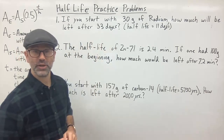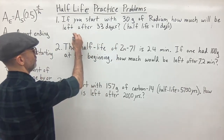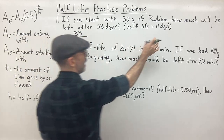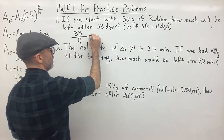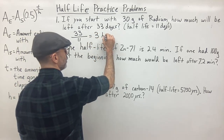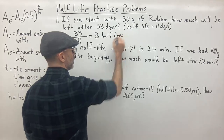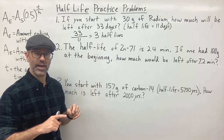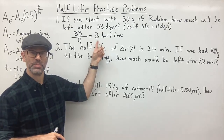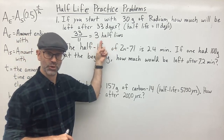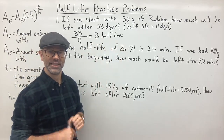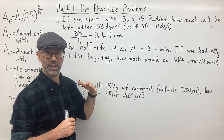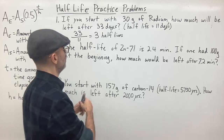You take the total time elapsed and divide it by the half-life. So 33 days divided by 11 days gives you 3 — three half-lives is what this sample has gone through. Now that I know the number of half-lives, I can divide my sample in half that many times, because every half-life the sample goes through means half of it has decayed into something else.